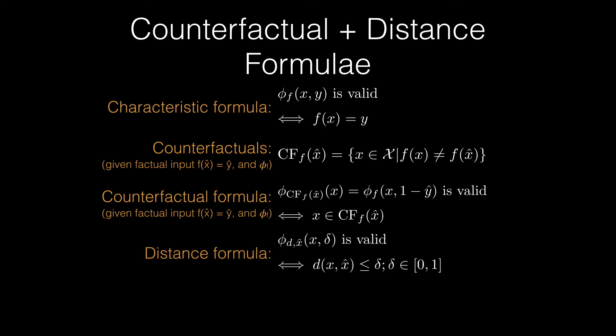For now, we assume a notion of distance and dissimilarity between instances D is given. For convenience and without loss of generality, we can assume that D takes values in the interval of 0 and 1. Therefore, we can derive the formula for a distance-restricted counterfactual.